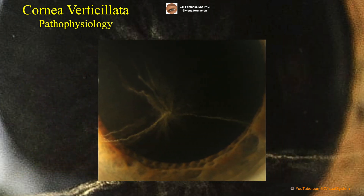Drugs that produce cornea verticillata share cationic-amphiphilic properties that allow them to readily enter lysosomes in the basal epithelial layer of the cornea, where they bind to cellular lipids, resulting in drug-lipid complexes that are resistant to enzymatic degradation and therefore accumulate as deposits in the cornea. On the other hand, endogenous causes of vortex keratopathy include lysosomal storage diseases.